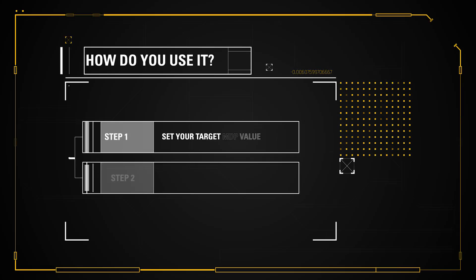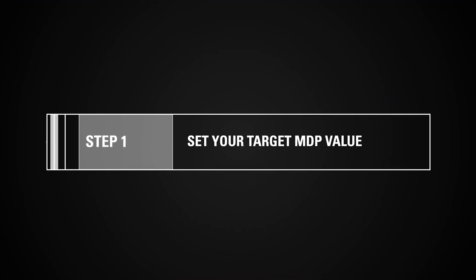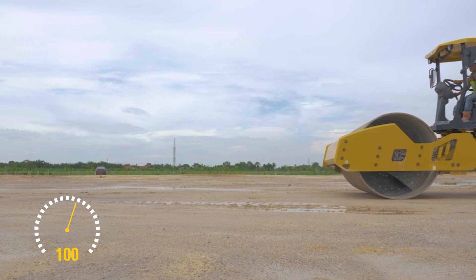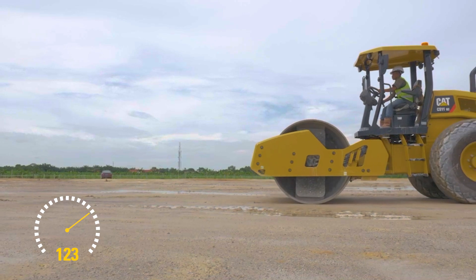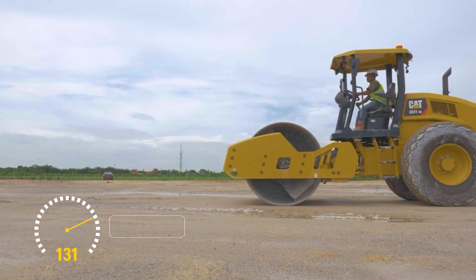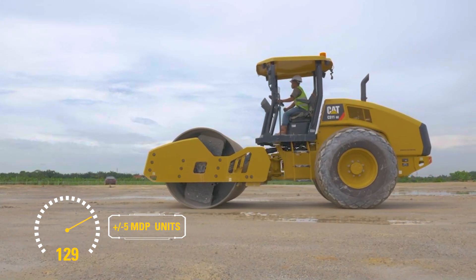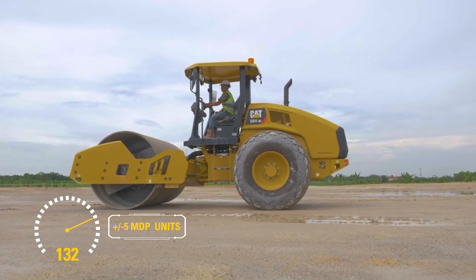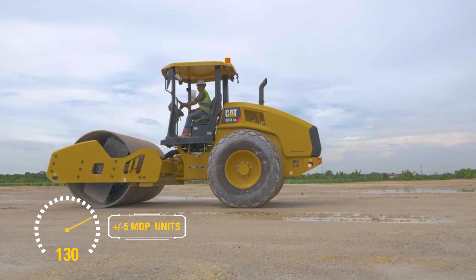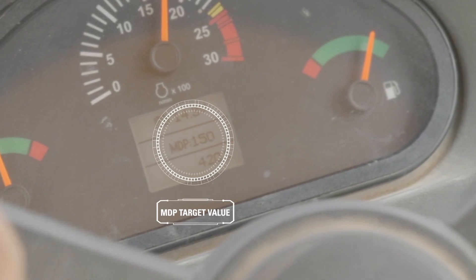How do you use it? Step 1: Set your target MDP value. Roll a lift in a test section until the value changes less than five MDP units with each additional pass when read in the same direction of travel. Note the MDP value on the LCD screen.